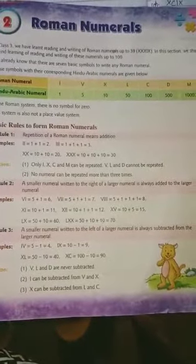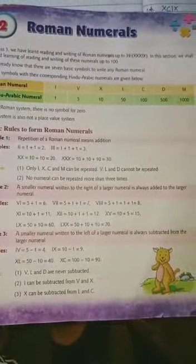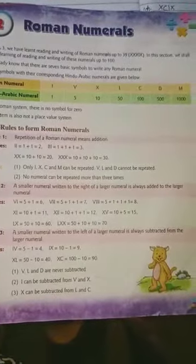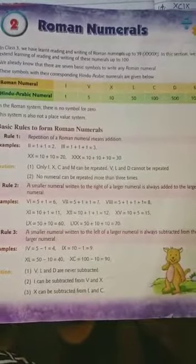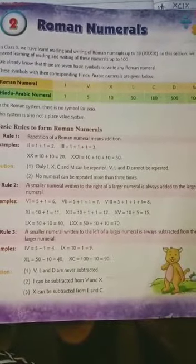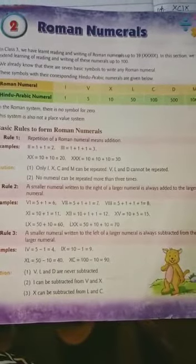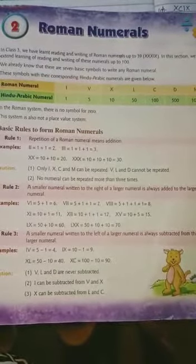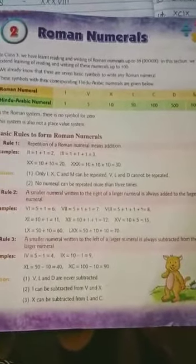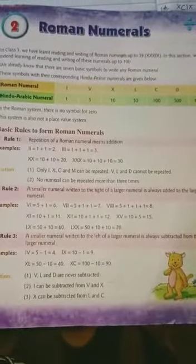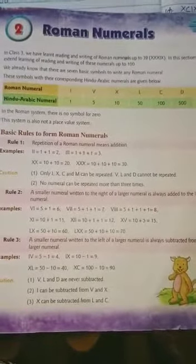In Class 3rd, we have learned reading and writing of Roman numerals up to 39. In this section, we shall extend learning of reading and writing of these numerals up to 100. So students, we learned Roman numerals up to 39 in Class 3rd, and now in Class 4th we will learn up to 100.